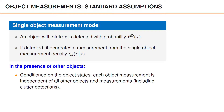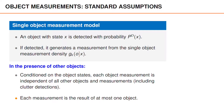When we have multiple objects, we simply assume that the measurements from the different objects are generated independently. More precisely, the object measurements from a single object are assumed to be independent of all other objects, all other object measurements, as well as of the clutter measurements. Finally, we note that each measurement is the result of at most one object — in other words, we assume that objects are resolved by the sensors such that two or more objects cannot jointly give rise to a single measurement.